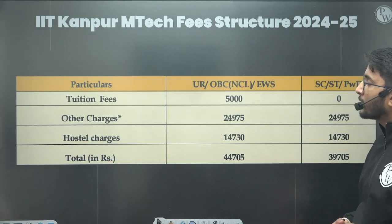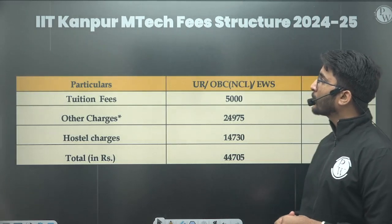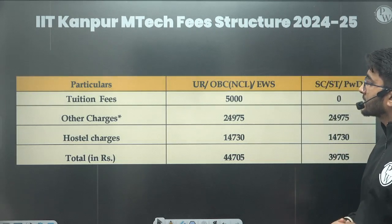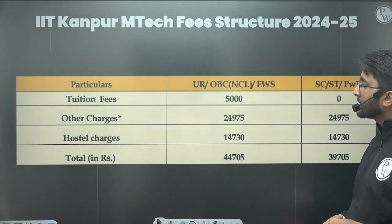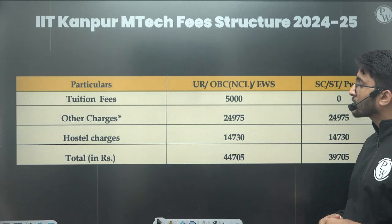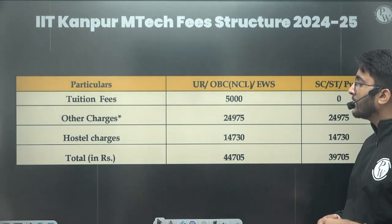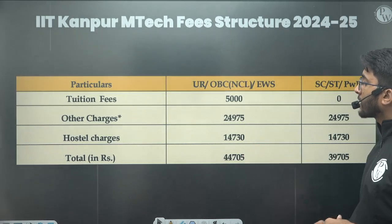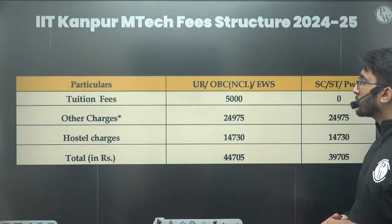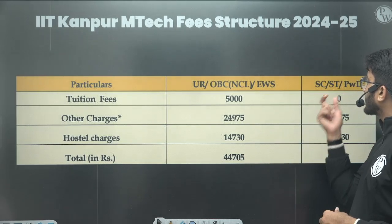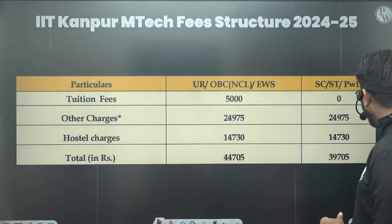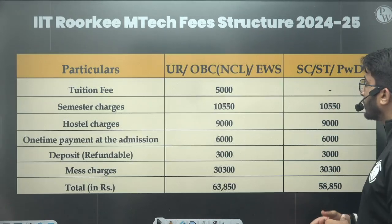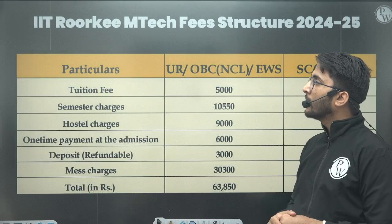For the IIT Kharagpur M-TECH fees structure specifically, the tuition fees is ₹5,000, other charges are ₹24,975, and hostel charges are ₹14,730. So the total is ₹44,705 for General, OBC-NCL, and EWS, and ₹39,705 for SC, ST, and PWD category at IIT Kharagpur.